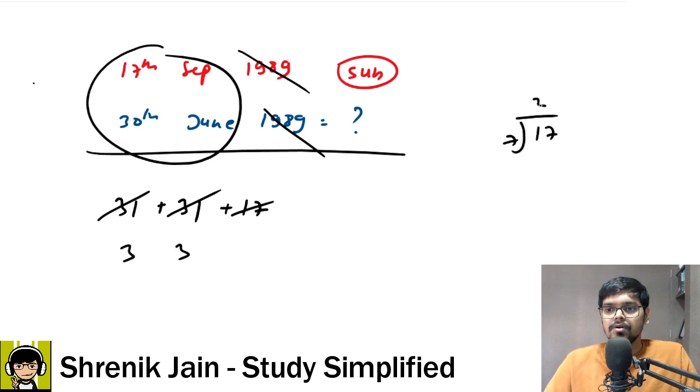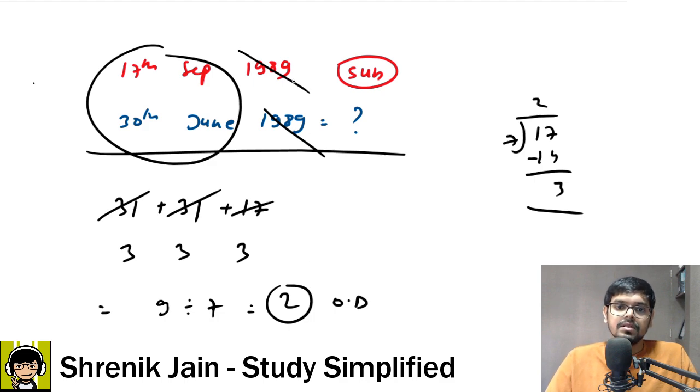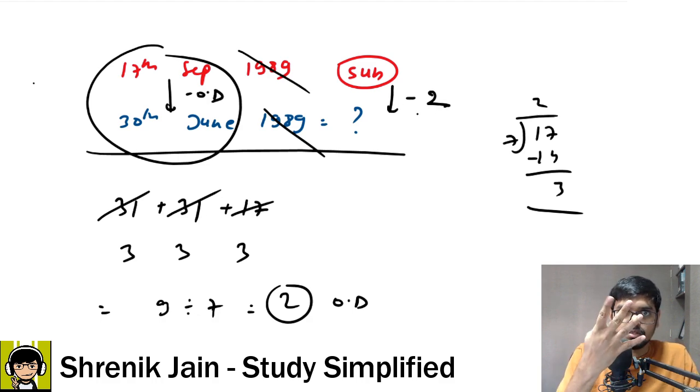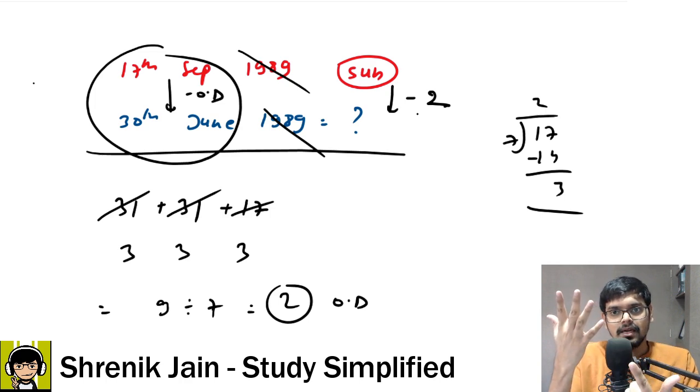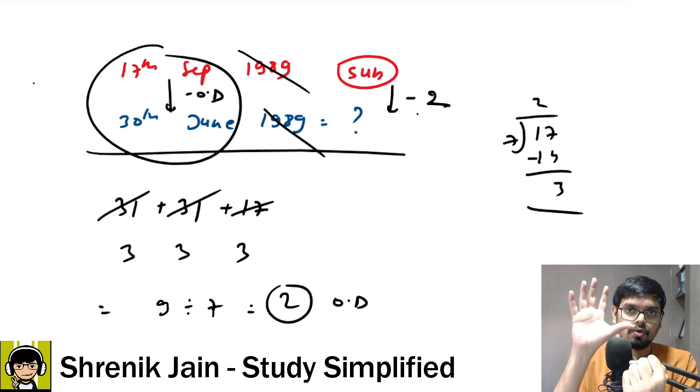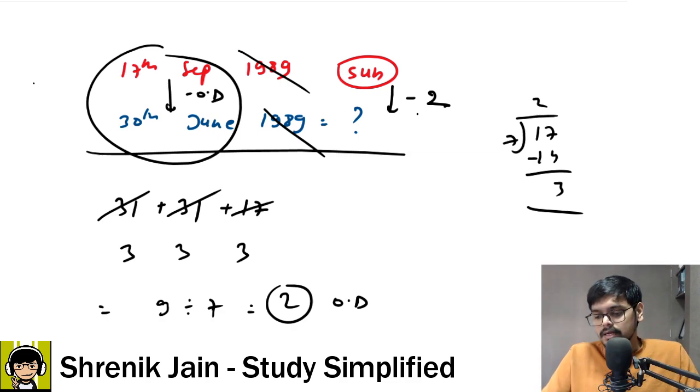So 3 plus 3 plus 3 is 9. 9 divisible by 7, remainder is 2. So 2 is the odd day. Since this is also in a backward direction, minus odd days will come, so minus 2. Again use the same concept: Monday, Tuesday, Wednesday, Thursday, Friday, Saturday, Sunday. Backward subtraction - Sunday is gone, Saturday is gone. Who is left? Friday. Therefore the given answer is Friday.